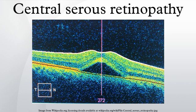Laser photocoagulation, which effectively burns the leak area shut, may be considered in cases where there is little improvement in a 3 to 4 month duration, and the leakage is confined to a single or a few sources at a safe distance from the fovea. However, for many cases the leak is very near the central macula, where photocoagulation would leave a blind spot, or the leakage is widespread and its source is difficult to identify. Foveal attenuation has been associated with more than 4 months' duration of symptoms; however, a better long-term outcome has not been demonstrated with laser photocoagulation than without.